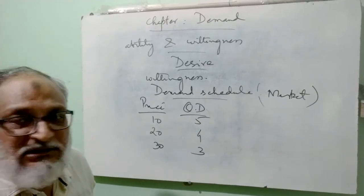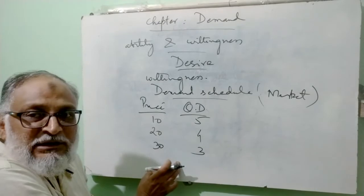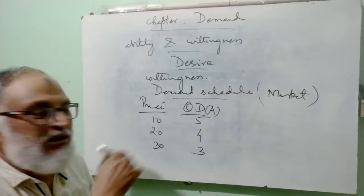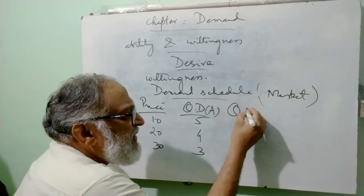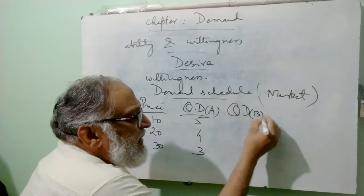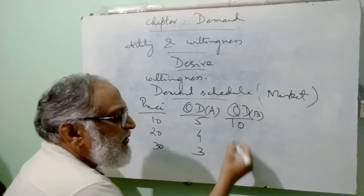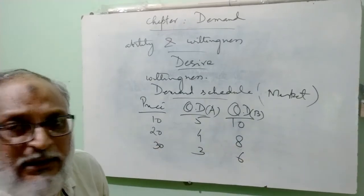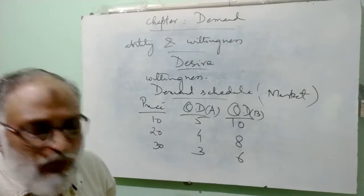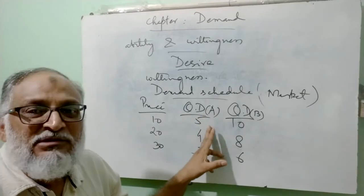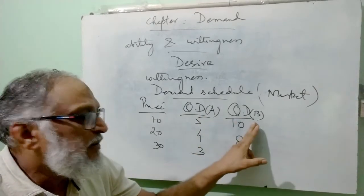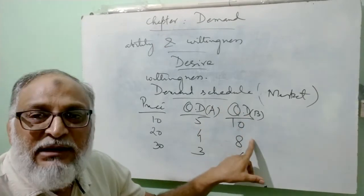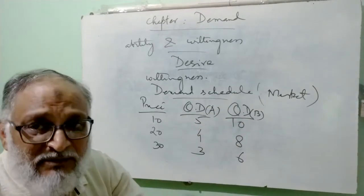So what change will come in the table? Understand — as this price increases, this is the first consumer A, whose demand we have shown. Similarly suppose there is a second consumer B — we showed their demand, and they reduced their demand from 10 to 8 and then 6. Different quantities — why? It's possible consumer A has less money and is poorer, while consumer B has relatively more money, so they were buying more compared to A.